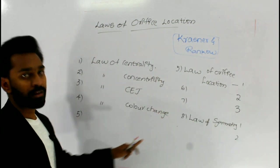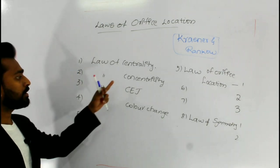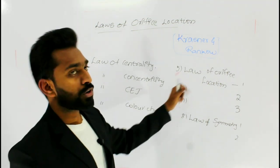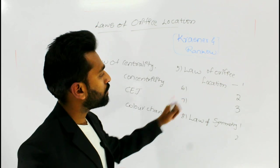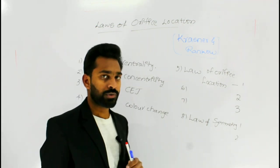These are the different nine laws given by Krasner and Ranco which include law of centrality, concentricity, law of cemento-enamel junction, law of color change, law of orifice location 1, law of orifice location 2, law of orifice location 3, law of symmetry 1 and law of symmetry 2. Thank you.